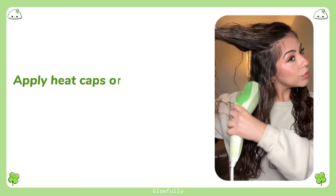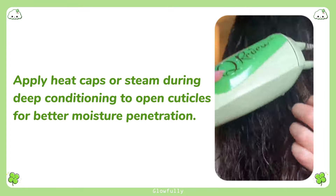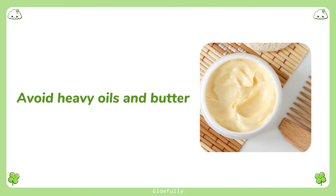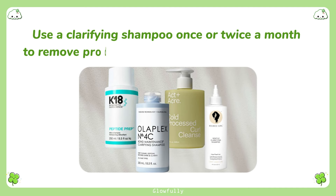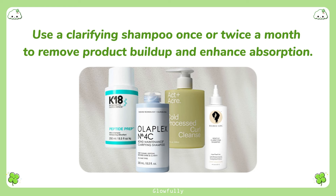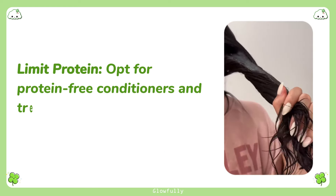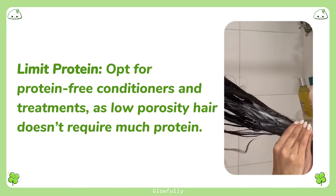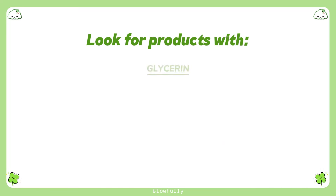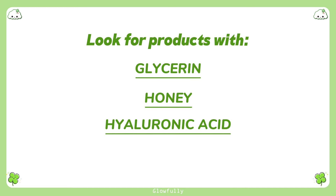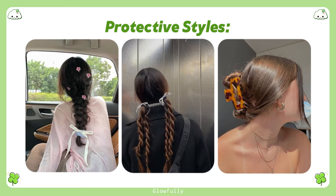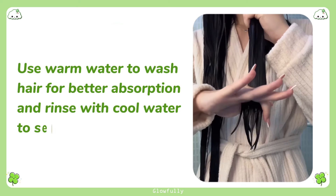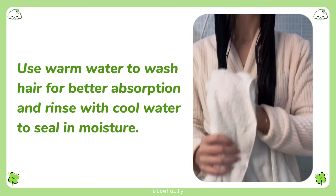Tips for low porosity hair: apply heat caps or steam during deep conditioning to open cuticles for better moisture penetration. Avoid heavy oils and butter; use lightweight, water-based leave-in conditioners and serums. Use a clarifying shampoo once or twice a month to remove product buildup and enhance absorption. Limit protein — opt for protein-free conditioners and treatments, as low porosity hair doesn't require much protein. Look for products with glycerin, honey, and hyaluronic acid to attract moisture without weighing hair down. Wear protective styles like braids, twists, or buns to retain moisture and protect hair from environmental factors. Use warm water to wash hair for better absorption and rinse with cool water to seal in moisture.